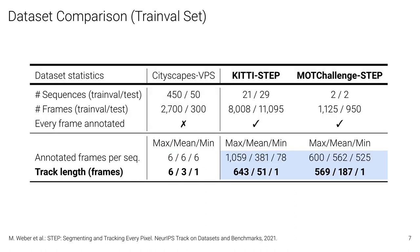When we look at the dataset statistics from our proposed datasets and compare them with Cityscapes VPS, it is evident that Cityscapes contains many more sequences, while our datasets contain many more frames per sequence, and also the total number of frames is larger as every frame is annotated. Particularly, looking at the number of annotated frames per sequence and the track length per frame, it is clear that our datasets provide long sequences, with long tracks that go up to over a minute. Such a setting is much closer to real-world applications, in which robots would have a continuous stream as input and therefore build up much longer tracks.